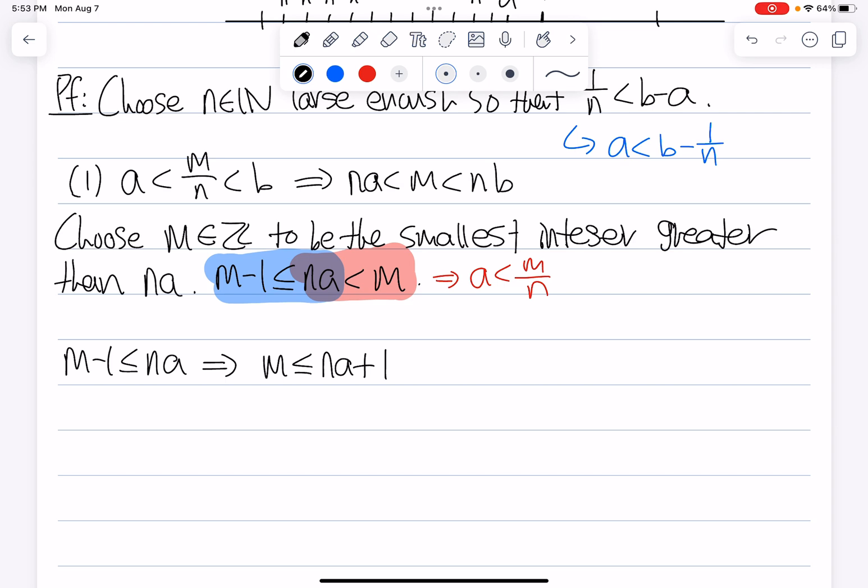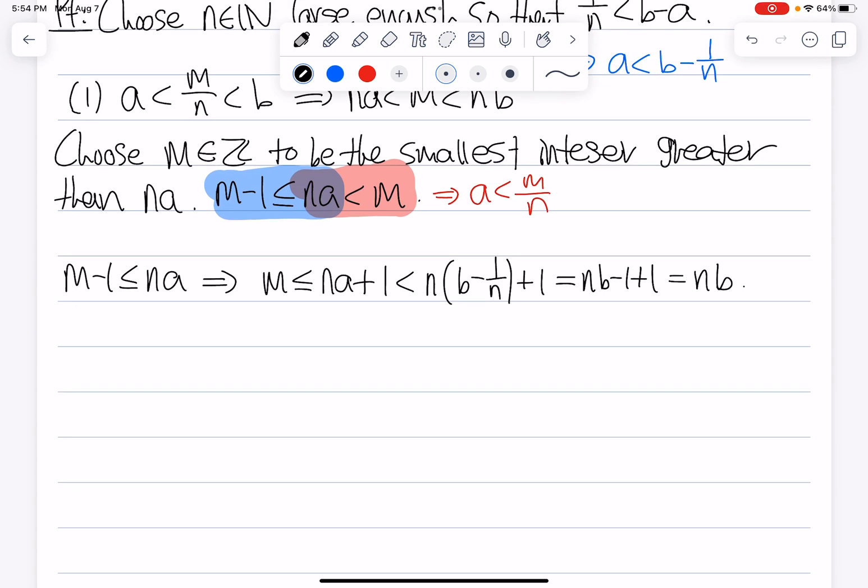We know that then NA plus 1 is going to be less than NB minus 1 over N plus 1, which is simply NB minus 1 plus 1, and simply applies to NB. So this whole expression implies we have M less than NB. But this simply just means that M over N is less than B.